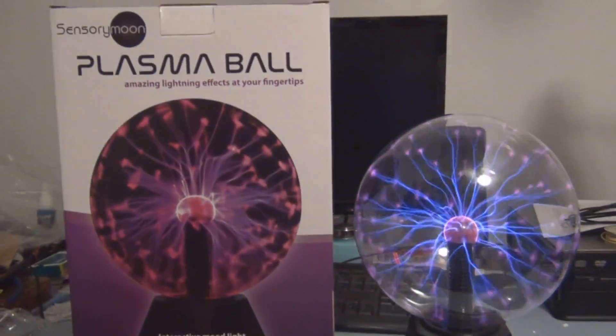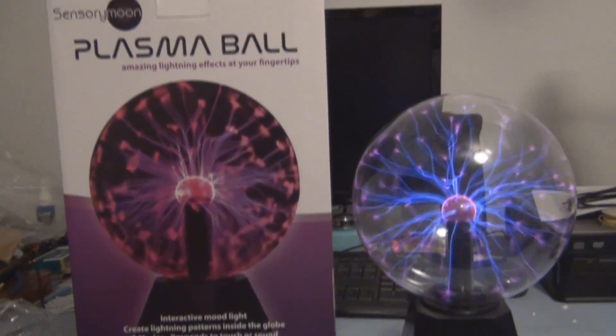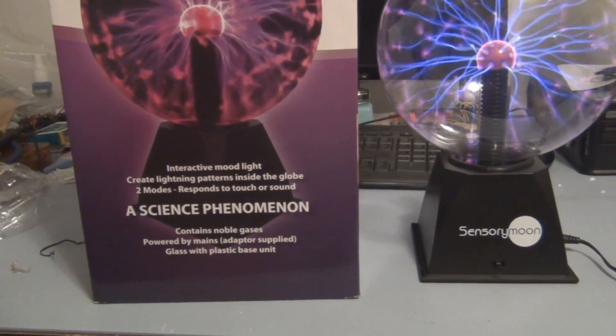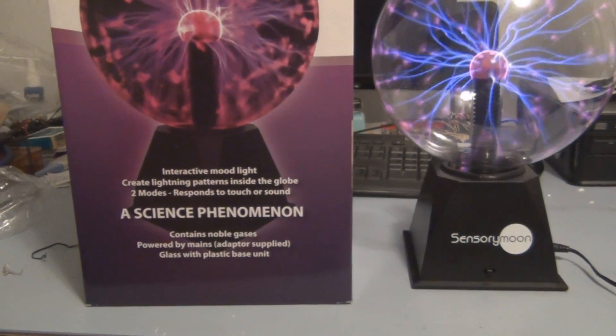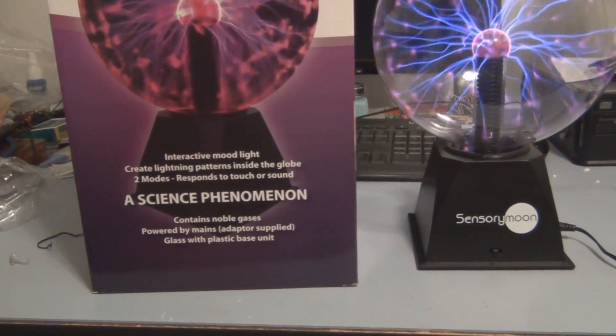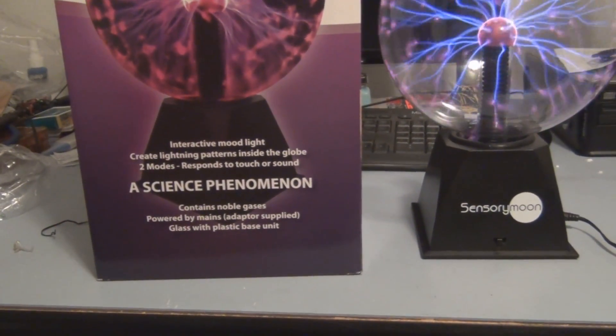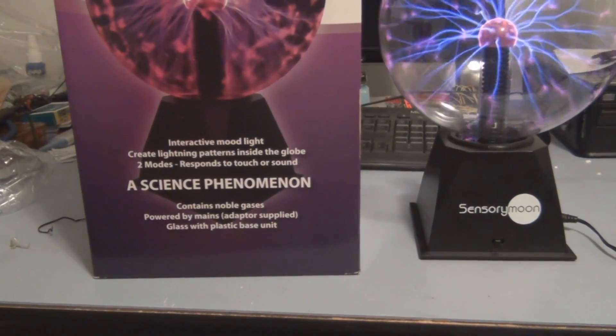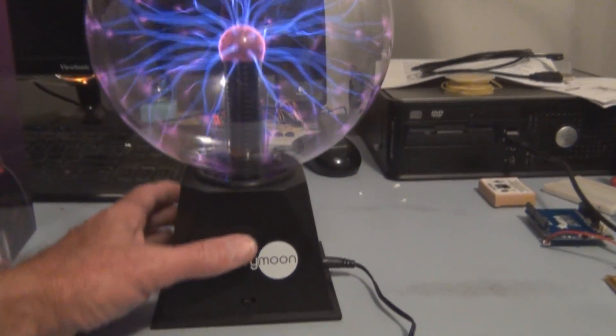So that is the Sensory Moon plasma ball, amazing lightning effect at your fingertips. Interactive mood light, create lightning patterns inside the globe. Two modes, responds to touch or sound. A science phenomenon, contains noble gases, powered by mains, adapter supplied. Glass with plastic base unit. It is pretty light like I said though, the adapter weighs more than the whole unit.